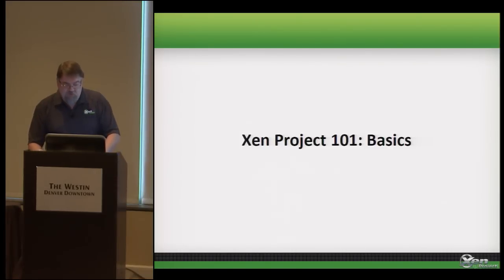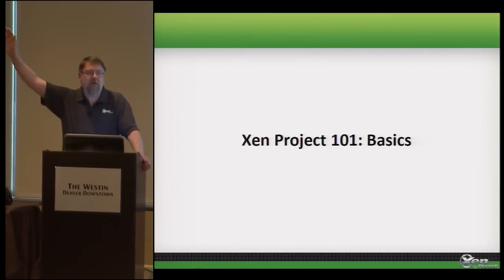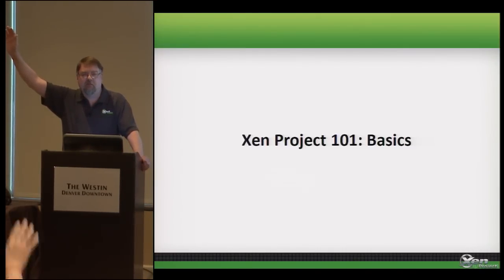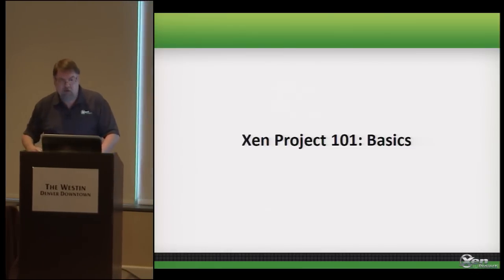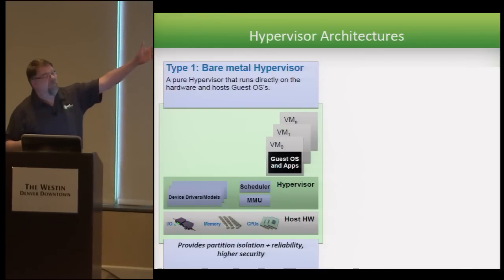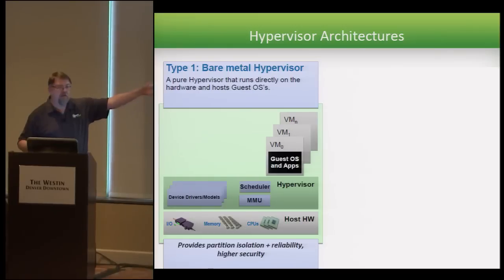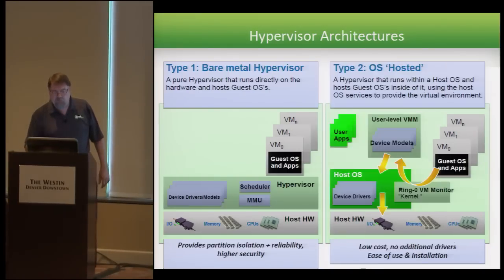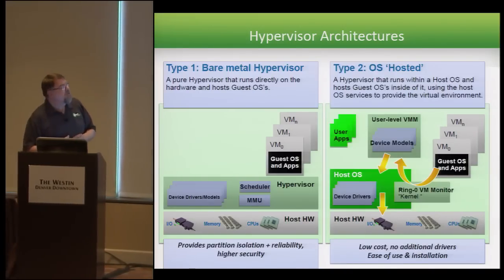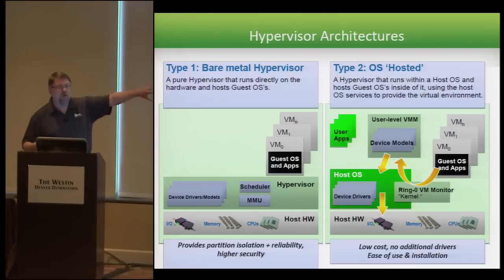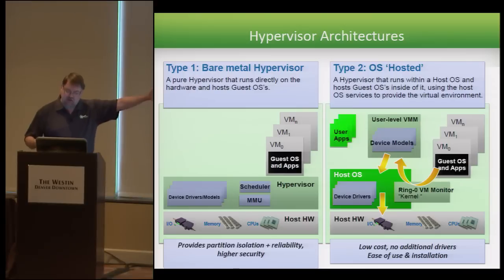I'm going to go very quickly through this section. This is your basic type one hypervisor — host hardware on the bottom, the hypervisor layer sitting on top, and VMs sitting happily above. Here's a type two or hosted style where we have a host OS with the hypervisor capabilities embedded into it, so the flow is a little different.